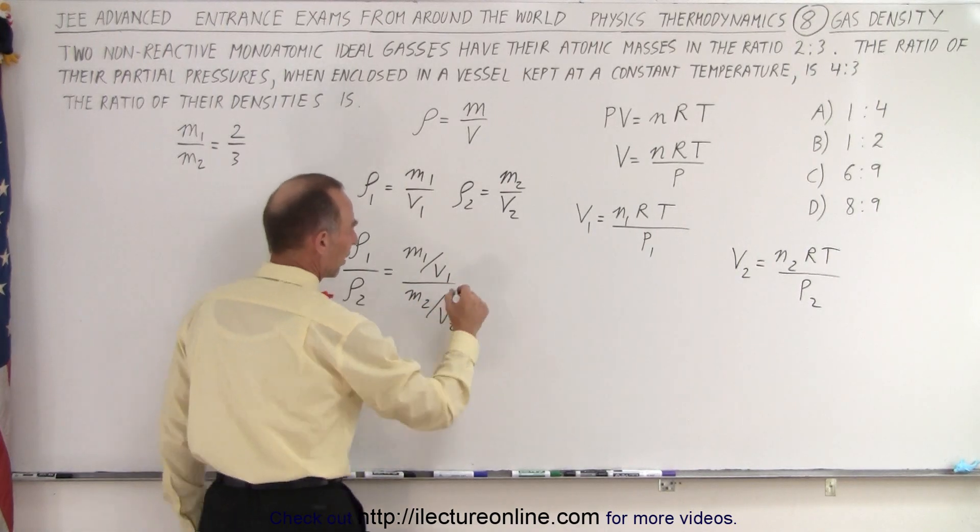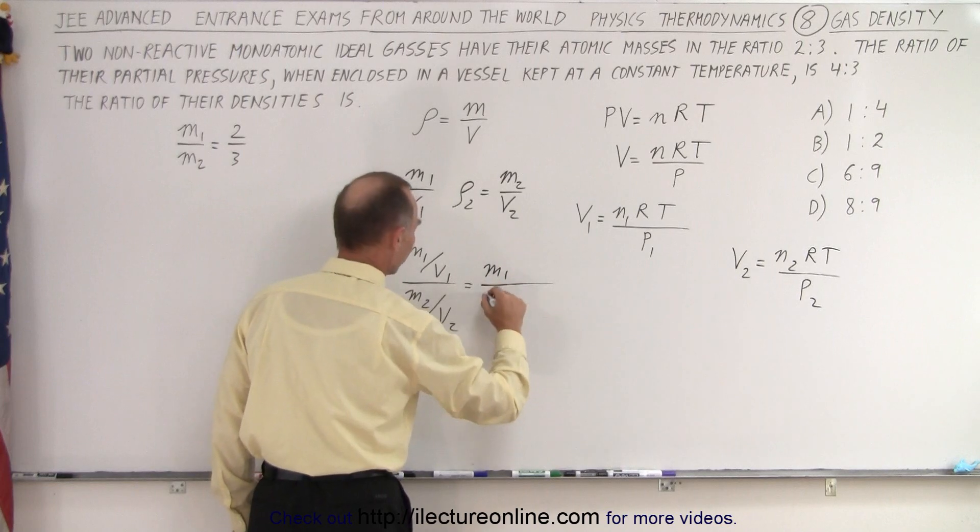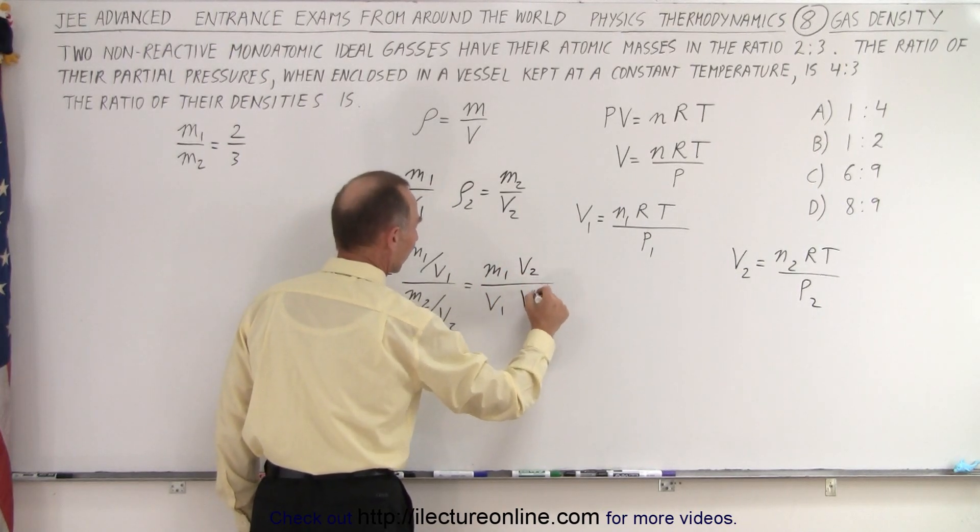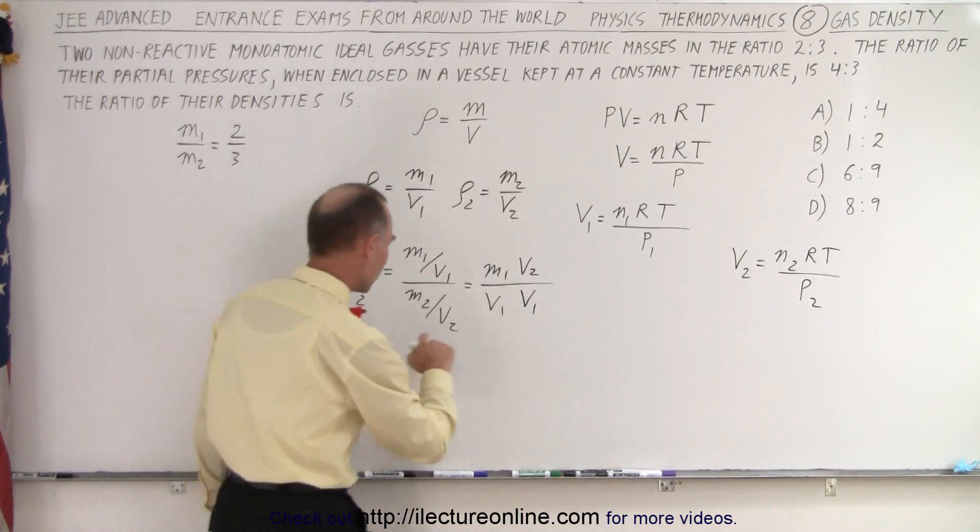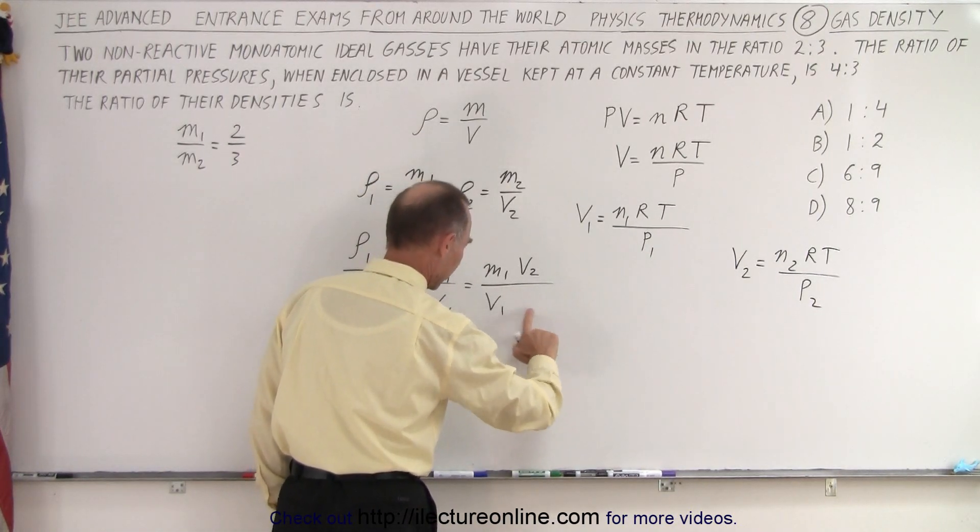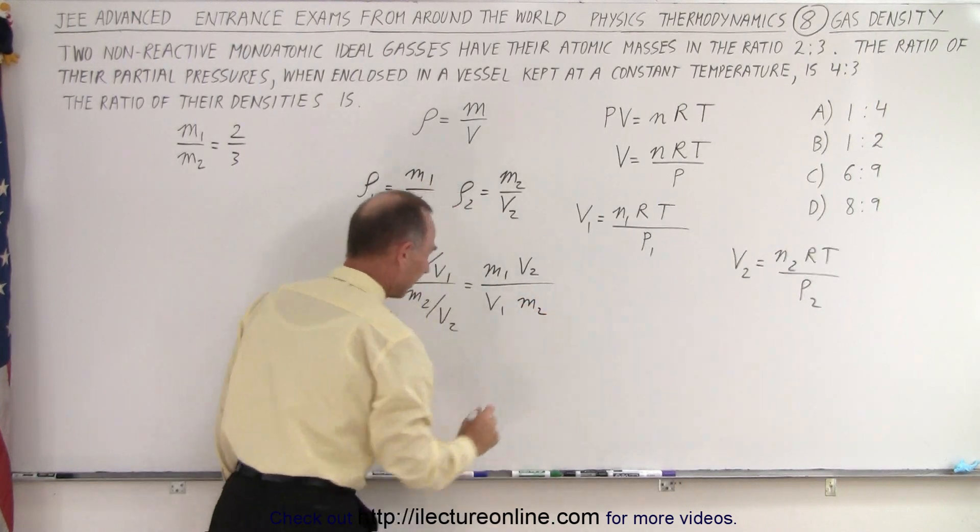And then we could rearrange that. So this is equal to m1 over V1. And then we have V2 divided by... Oh wait, not V1, but m1. M2. All right, there we go.